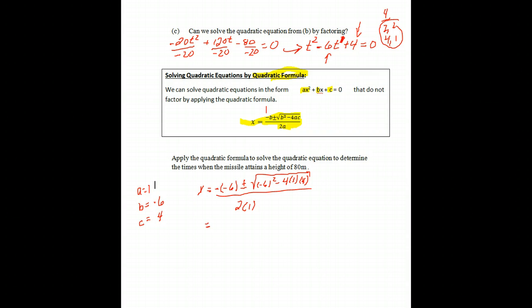Let's simplify. Negative and negative 6 is 6, plus or minus 36, subtract 4, times 1, times 4, 16.